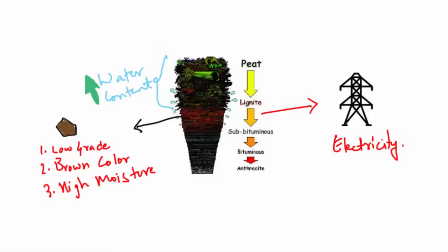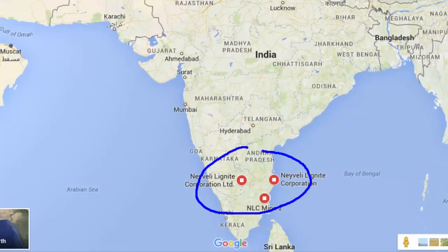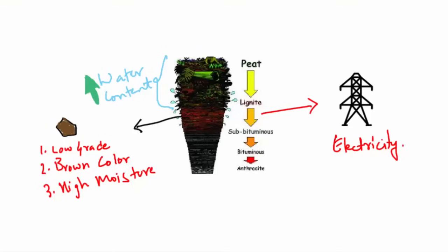In this place, you will find lignite coal. This kind of coal is found in the regions of Nivelli in Tamil Nadu. And they are used for generating electricity.